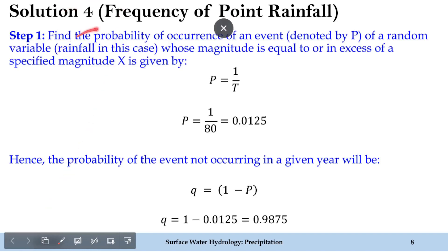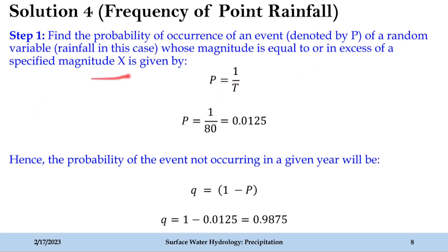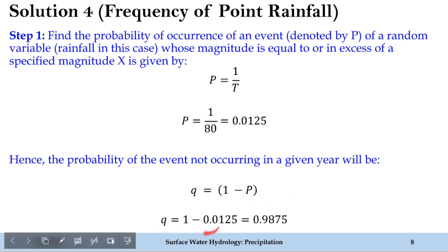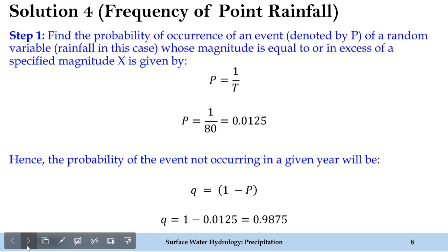In step 1, we find the probability of occurrence of the event, denoted by p — that is, where the magnitude equals or exceeds the specified magnitude x. This is given by p = 1/T, where T is the return period. So p = 1/80 = 0.0125. The probability of the event not occurring is q = 1 − p = 1 − 0.0125 = 0.9875. I hope you were able to follow step 1.